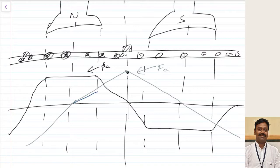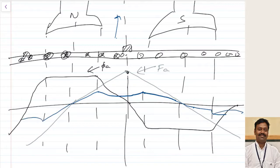After that, the reluctance for the flux path increases, so the flux will decrease up to a point and then linearly follow. Again it will decrease similarly. As a result of this, the resultant MMF wave — which is the sum of these two MMF waves — will have a maximum at one point and a maximum at another point, then decay. When one is zero, the other is not zero, so this is the resultant MMF wave.